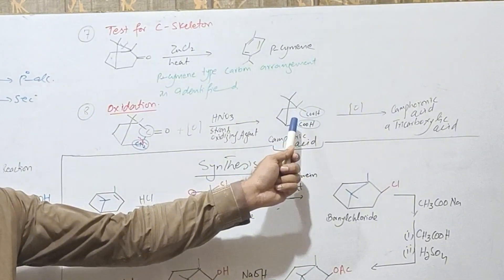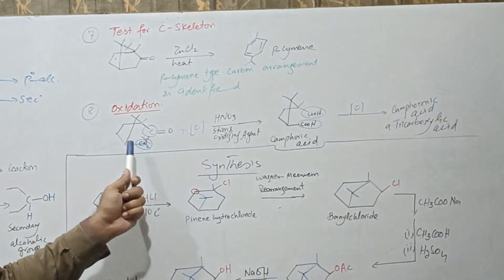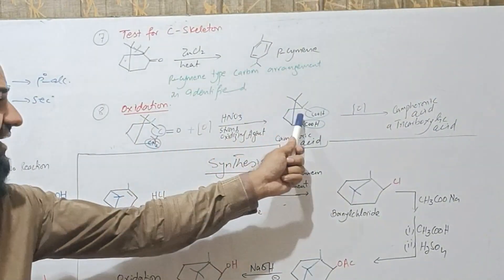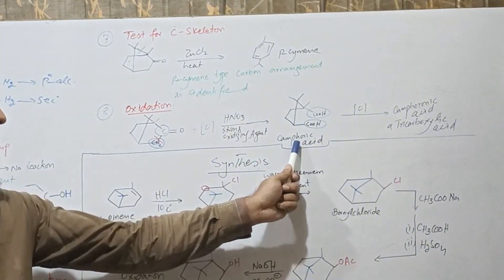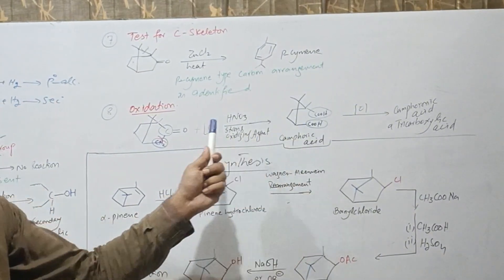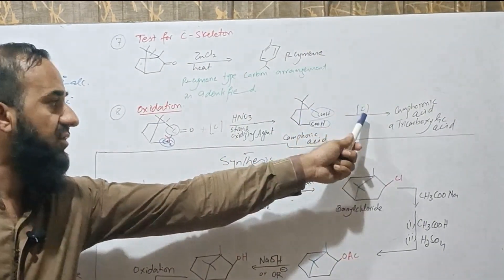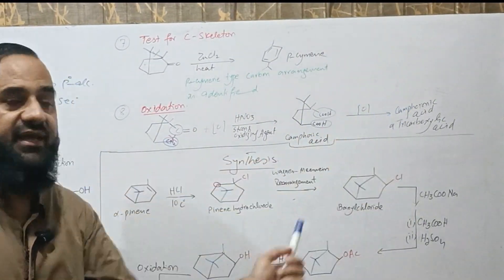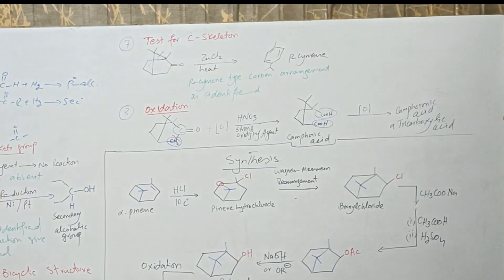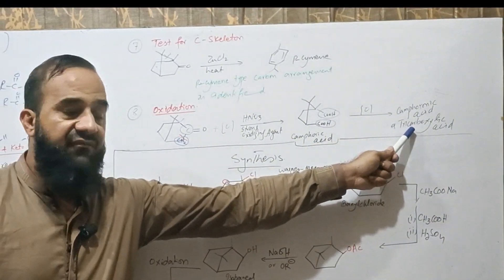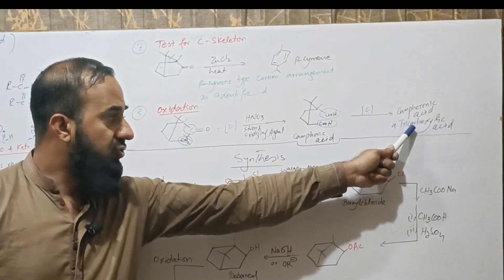The structure of camphor is like this. If we move reverse to this reaction, then camphoric acid shows that structure of camphor is like this. Camphoric acid upon further oxidation gives camphoronic acid, a tricarboxylic acid, and structural elucidation of camphoronic acid shows that it forms from this structure.